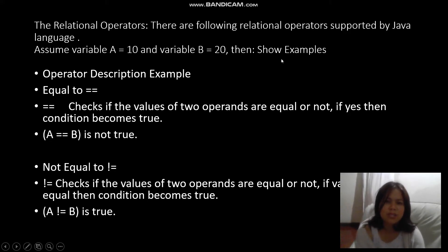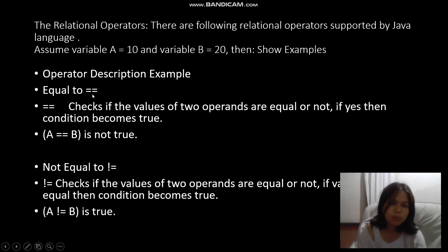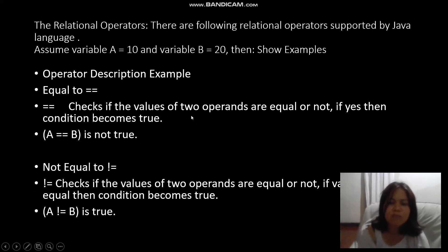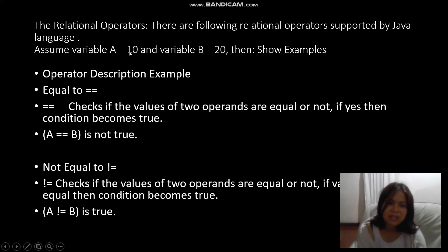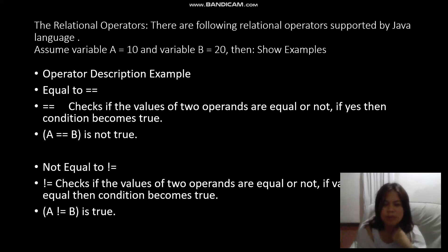Let's say we have variable a which equals 10 and variable b which equals 20. The first operator is equal-to, symbolized by double equals (==). It checks if the two operands are equal — if yes, the condition is true; otherwise it is false. For example, if a == b, that is 10 == 20, so this is false.